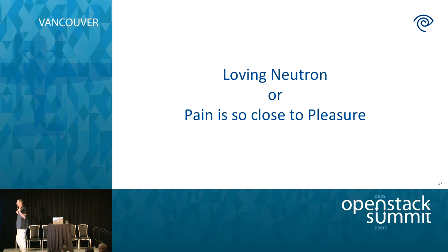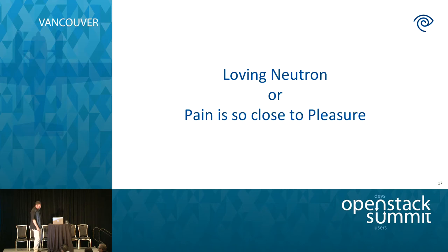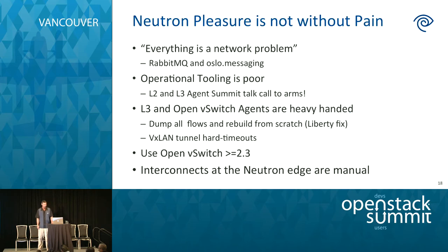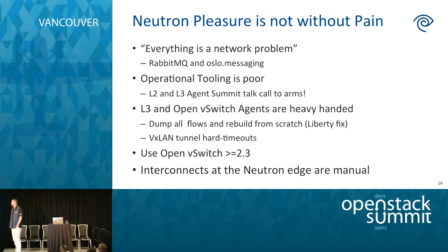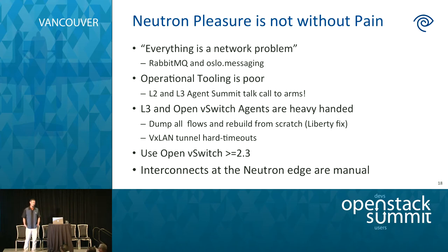When everything's up and running and you've had some pain points, customer calls start coming in, servers go down, and unexpected things happen — and they will. Here are a few things we ran into, some very recent and some ongoing. One ongoing issue is that everything's a network problem, including if your message queuing hiccups.